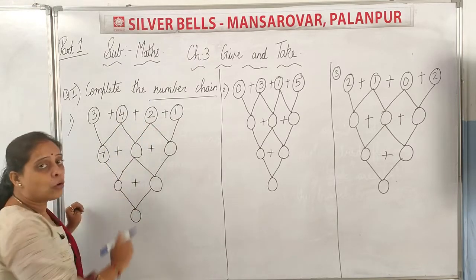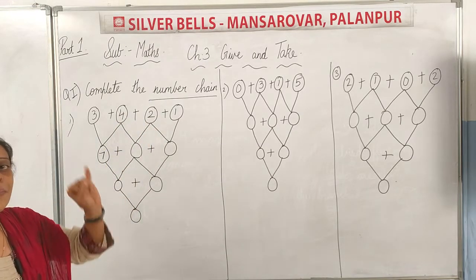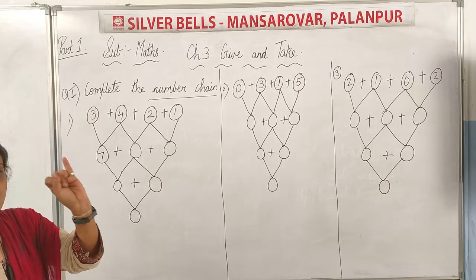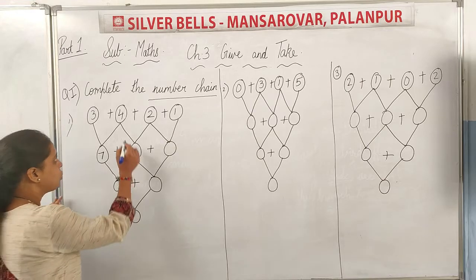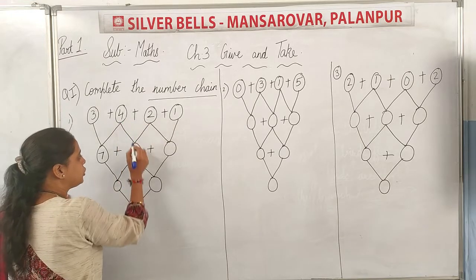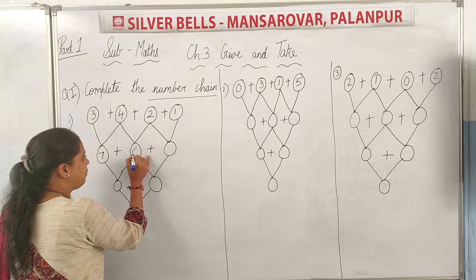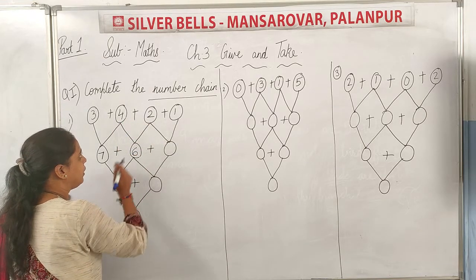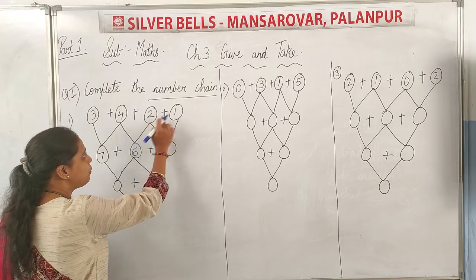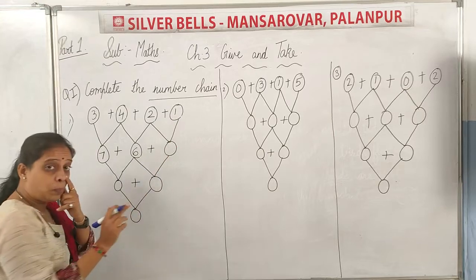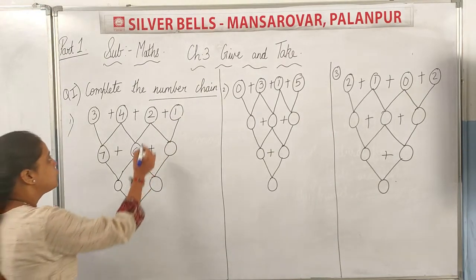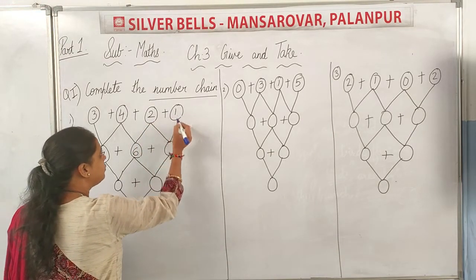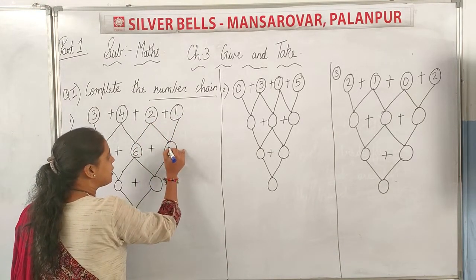Now 4 plus 4 — how do you answer that? Next, 2 plus 1. 2 plus 1 is 3. So 2 plus 1 is 3.